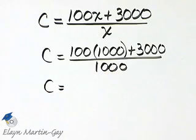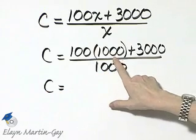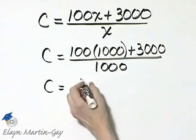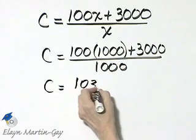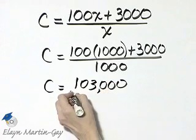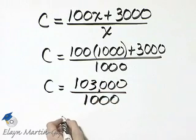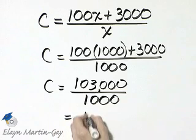The cost will be 100 times 1,000. That's 100,000 plus 3,000. That's 103,000 divided by 1,000. And if you divide, you'll have that it is 103.